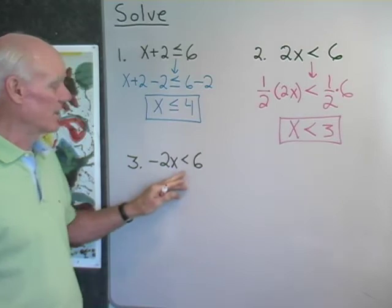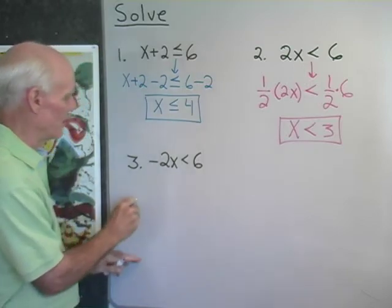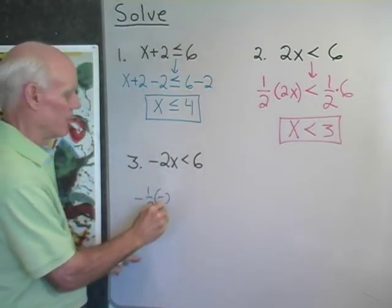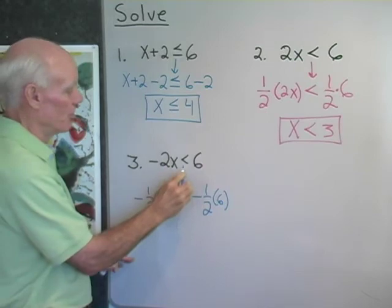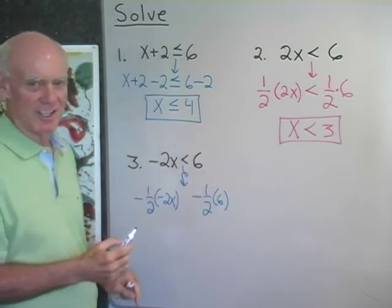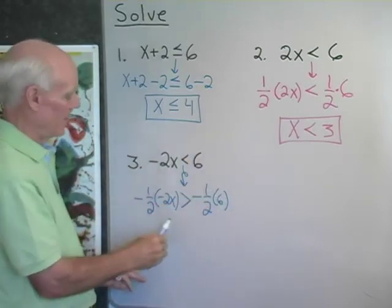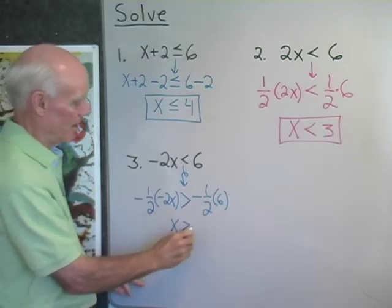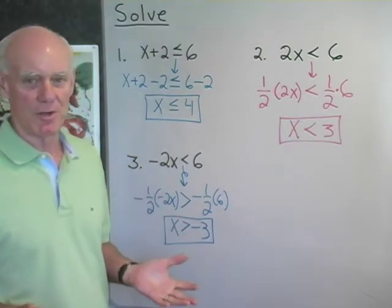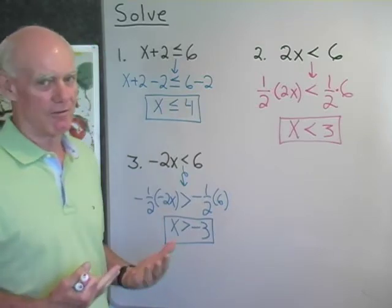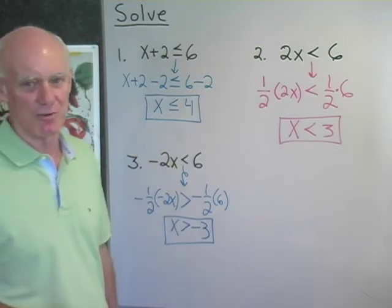My last example: negative 2x less than 6. In this case, I want to multiply both sides by negative one-half. I can multiply both sides by any negative number I want — it's just that when I do that, I have to, at the same time, reverse the direction of the inequality symbol. So it's going to look like that. It pointed to the left; now it points to the right. This gives me x greater than negative 3. That's the solution — multiplying both sides by a negative number is okay anytime, but every time you do it, you must also reverse the direction of the inequality symbol.